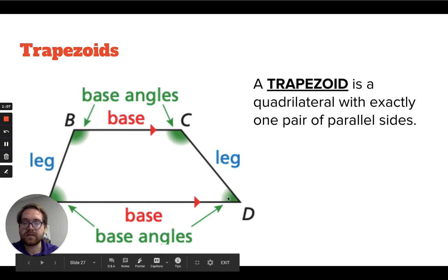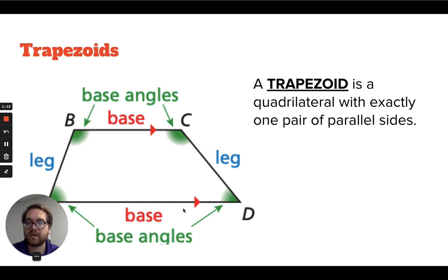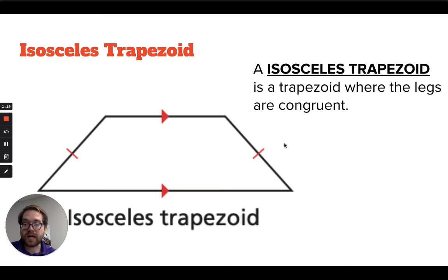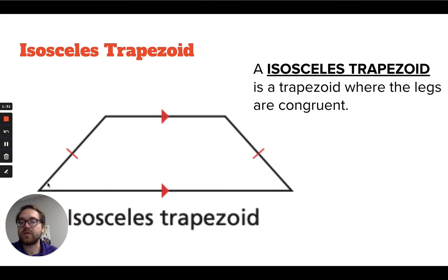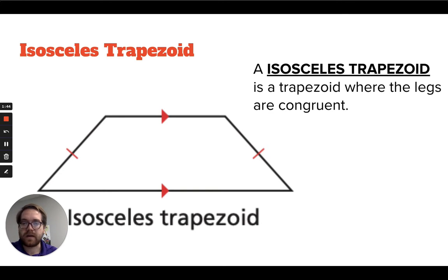There are two pairs of base angles: one pair at the bottom and one pair at the top. A specific type of trapezoid is called an isosceles trapezoid, where the legs are congruent to each other. So it's a normal trapezoid except the legs happen to be the same length. We'll look at those more because it's a little easier to figure out their measurements when it's an isosceles trapezoid, since there are a few properties we know about them.